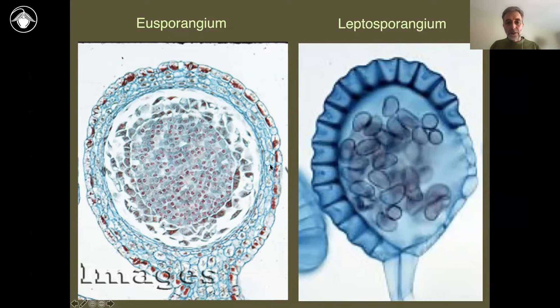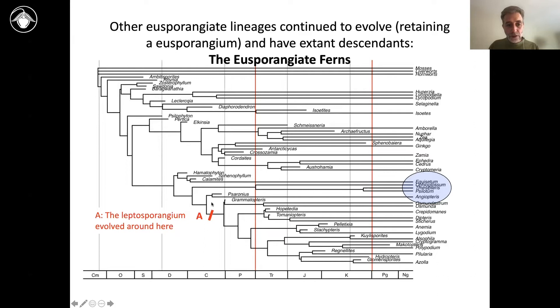This is what a eusporangium looks like. It's a sporangium that is thick-walled instead of thin-walled, formed from several initial cells, and it contains many spores. There's lots of variation, but it differs from a leptosporangium in all of those characteristics. That's the type of sporangium that most of this phylogeny has, including all the ancestral lineages, and some of those have extant living relatives that still have eusporangia.